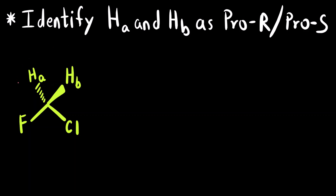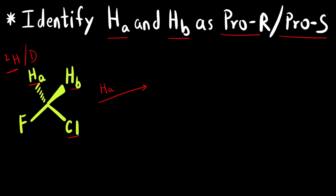Now let us apply this to our molecule. There are two similar atoms — both are hydrogens — labeled HA and HB. We have to assign whether each is Pro R or Pro S. First step: let us replace HA with a slightly higher atomic mass, which means replacing it with deuterium, ²H. By replacing it with deuterium, the priority order of chlorine and fluorine will not change since deuterium also has an atomic number lower than fluorine and chlorine.